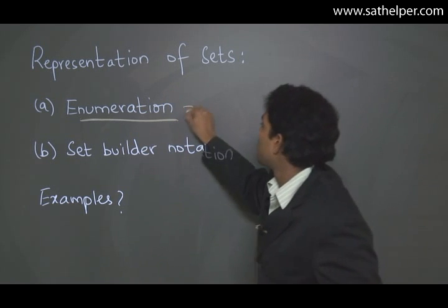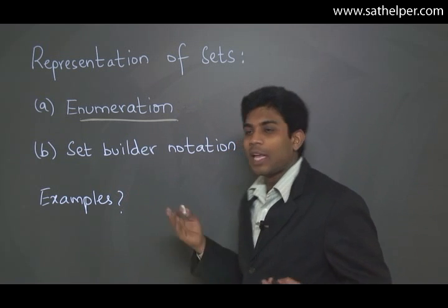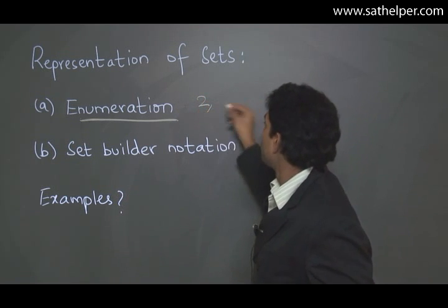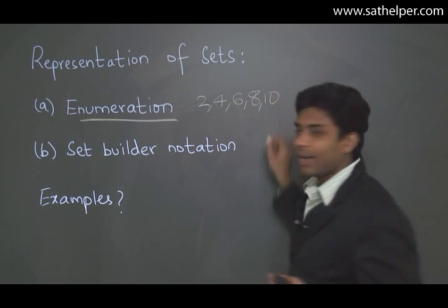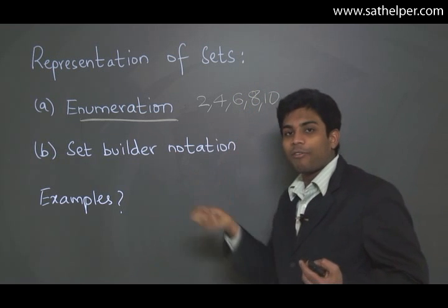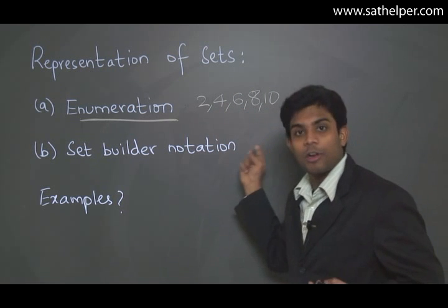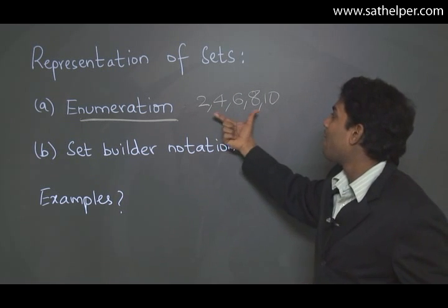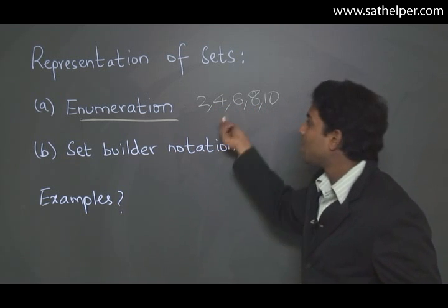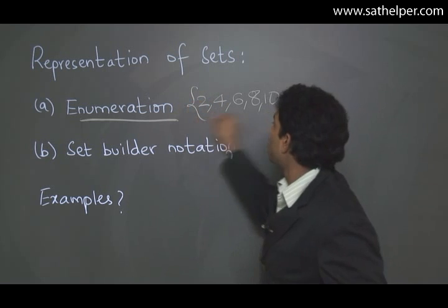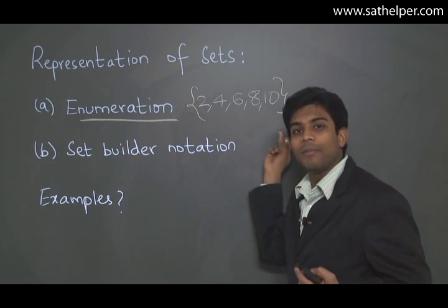For example, if your set is the set of even numbers less than or equal to 10, then the elements are 2, 4, 6, 8, and 10. This is a set of even numbers where each is less than or equal to 10. Since we only have 5 natural numbers that are even and less than or equal to 10, we can represent this set by enumeration: {2, 4, 6, 8, 10}.